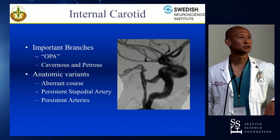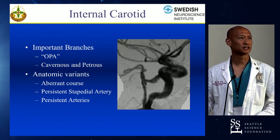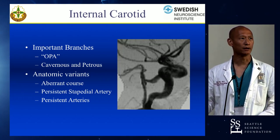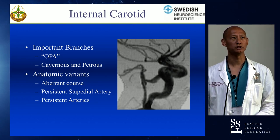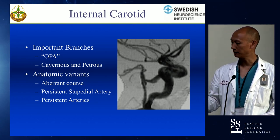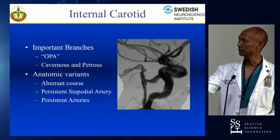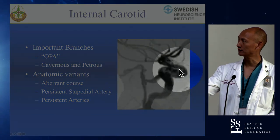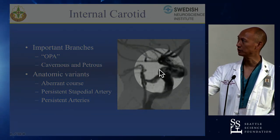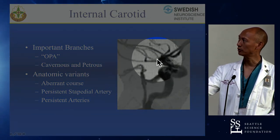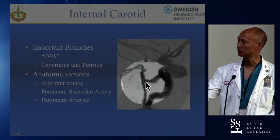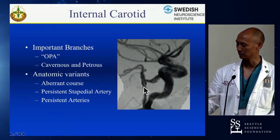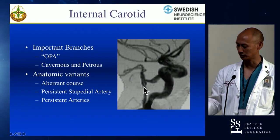Here is a picture of a persistent trigeminal from an MRA. At first glance you may say that's just the posterior communicating, but paying closer attention you realize the origin is coming from the posterior genu — where a posterior communicating would actually come off the communicating segment. In this case, this persistent trigeminal is just attaching to the basilar trunk.